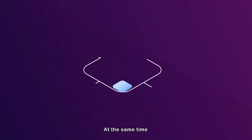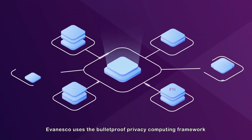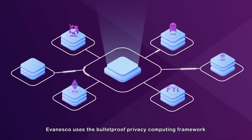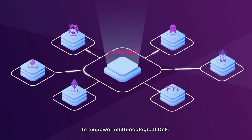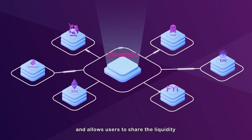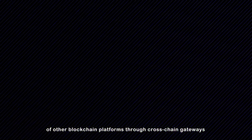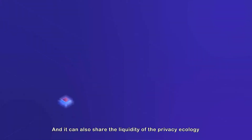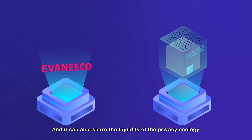At the same time, Evanesco uses a bulletproof privacy computing framework to empower multi-ecological depth and allows users to share the liquidity of other blockchain platforms through cross-chain gateways. It can also share the liquidity of the privacy ecology.